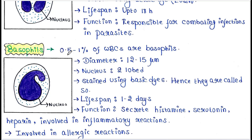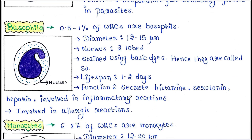Basophils: 0.5 to 1 percent of WBCs are basophils. Diameter 12 to 15 micrometers. Nucleus is 2 lobed. They are stained using basic dyes, hence they are called basophils. Lifespan 1 to 2 days. Function: they secrete histamine, serotonin, and heparin, which are involved in inflammatory reactions. They are also involved in allergic reactions.